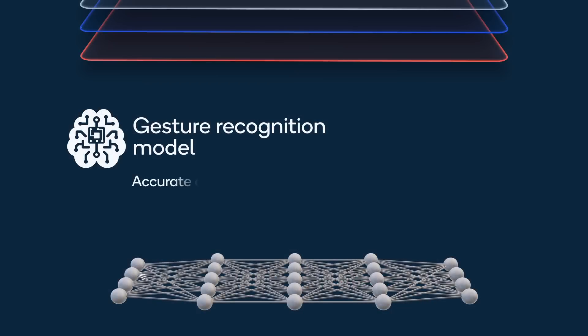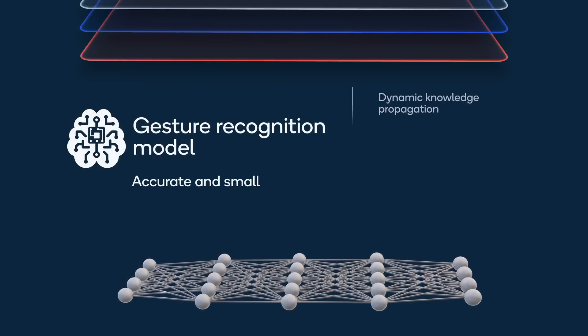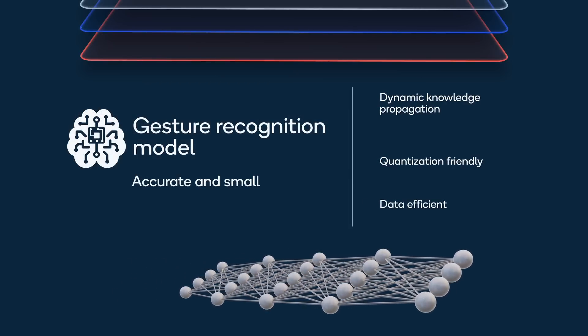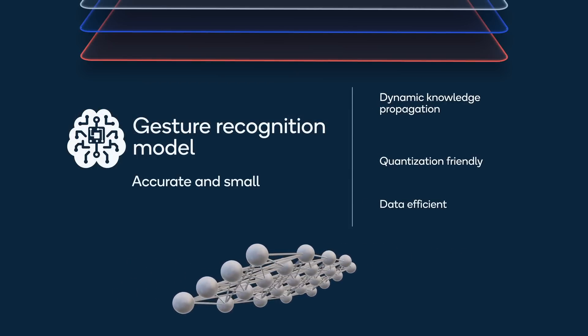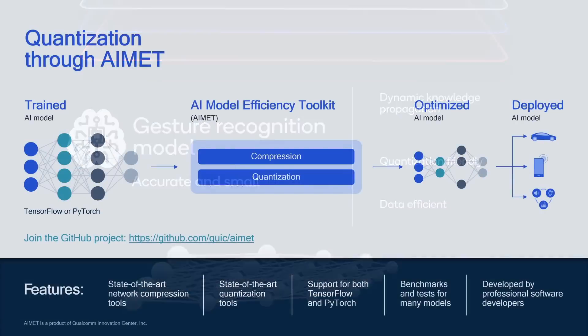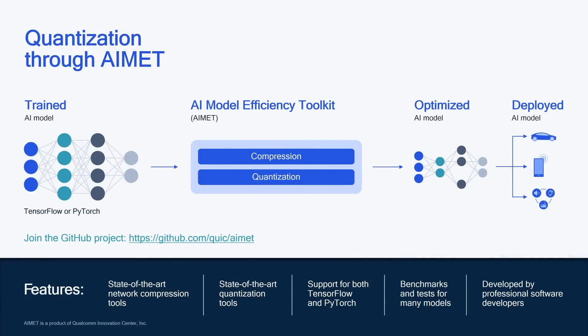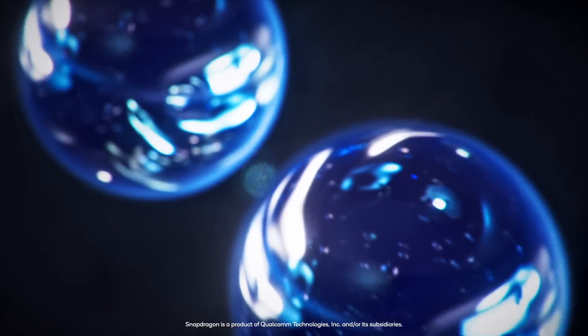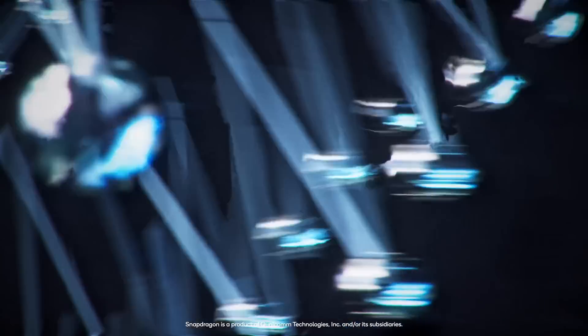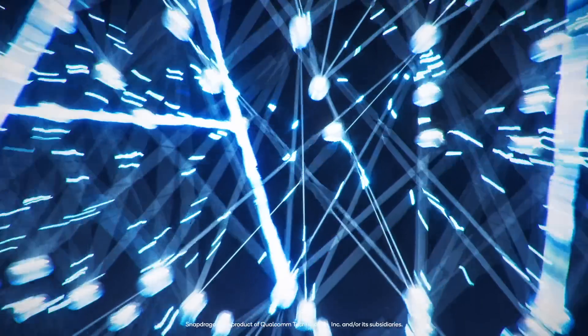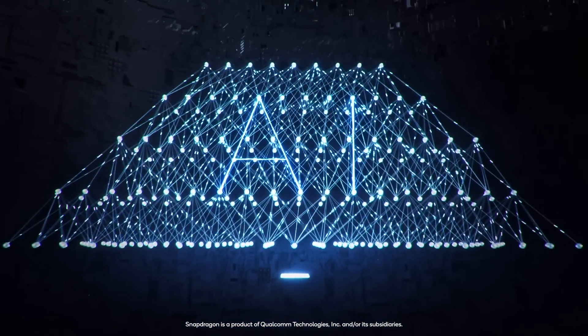We developed an accurate and small gesture recognition model using dynamic knowledge propagation. We further reduced the model size by quantizing it with the AI Model Efficiency Toolkit, AIMET. Finally, we utilized the AI hardware acceleration on the Snapdragon-powered tablet for efficient processing.